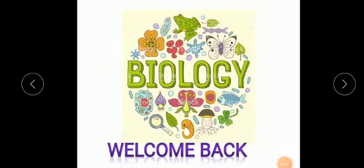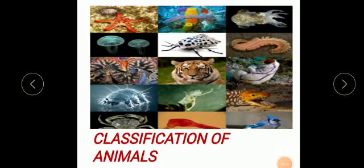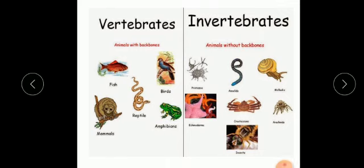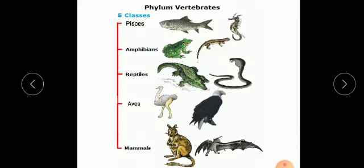Welcome back to the biology class. We are discussing classification of animals. We have learned that the animal kingdom is classified on the basis of absence or presence of a backbone. Animals with a backbone are known as vertebrates, whereas animals without a backbone are known as invertebrates. Vertebrates are further divided into five classes: Pisces, amphibians, reptiles, aves, and mammals.